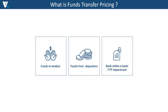Let's start. What is the funds transfer pricing process? Funds transfer pricing is a term used to describe the sum of policies and methodologies which a bank applies to charge for the use and credit the generation of funding and liquidity. As such, it is the exercise of allocating the cost of liquidity between business units at the same firm. You can think about it as having three main participants: in the middle, you have the central unit which acts as a bank within a bank — this can be the ALM or treasury department.